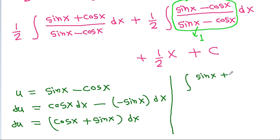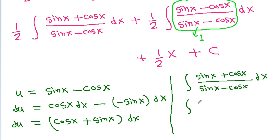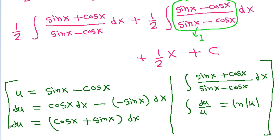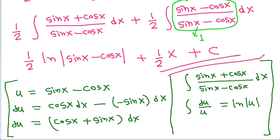So the integration of (sin(x) + cos(x)) divided by (sin(x) minus cos(x)) dx, using the substitution, becomes the integration of du divided by u, which is ln|u|. Therefore, this will be equal to 1/2 times ln|sin(x) minus cos(x)|, and this is the value of the integration.